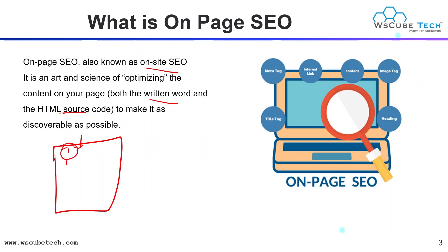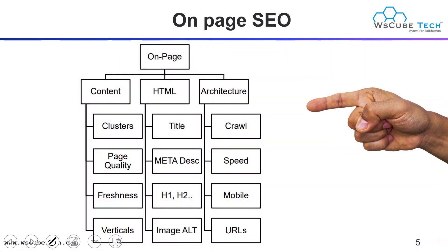In On-Page SEO we work on your title, your meta description, your linking part, your images, your videos — all parameters available on your website. We have some factors considered in On-Page SEO activities. First, we have content. Then we have HTML, and then we have architecture. Let's start learning one by one what these are and what we'll cover in this session.